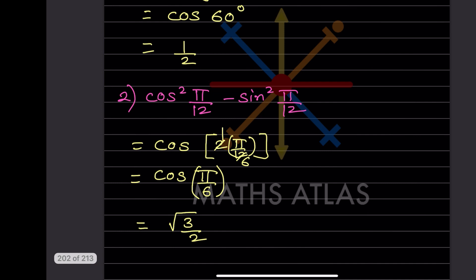Next: cos²(π/12) - sin²(π/12). Using cos²θ - sin²θ = cos2θ, with θ = π/12, we get cos(2·π/12) = cos(π/6).